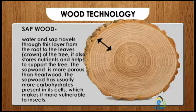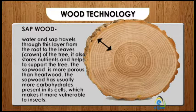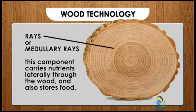Three: sapwood — water and sap travel through this layer from the root to the leaves or crown of the tree. It also stores nutrients and helps to support the tree. The sapwood is more porous than heartwood. The sapwood usually has more carbohydrates present in its cells, which makes it more vulnerable to insects.